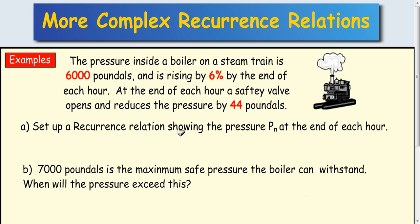Set up a recurrence relation showing the pressure P n at the end of each hour. Same as before, P n+1 equals, then we look for our multiplier. In this case the pressure's rising by 6%, so it started at 100, it's now up to 106. So you multiply as 1.06 P n.